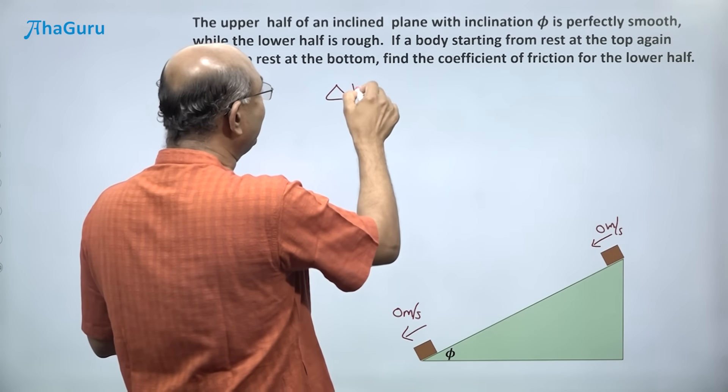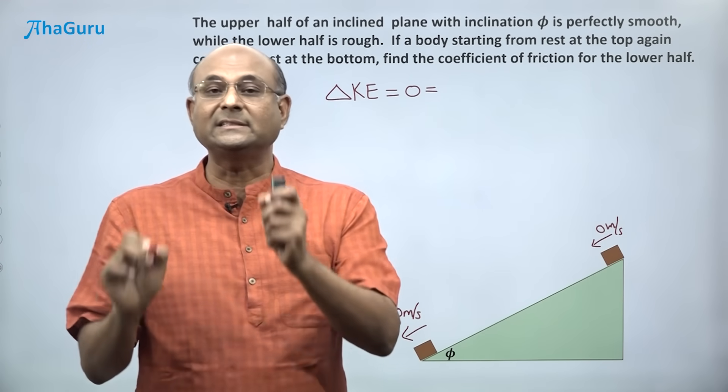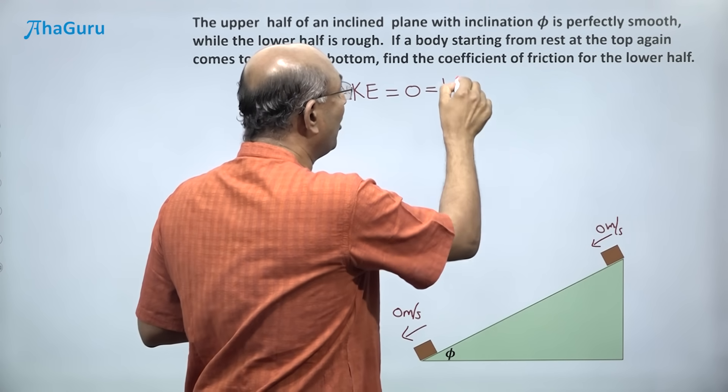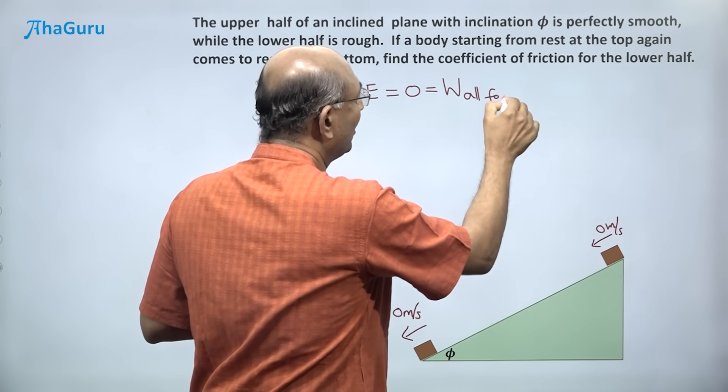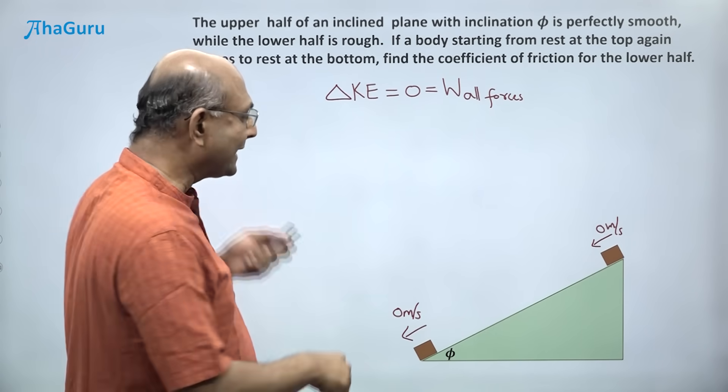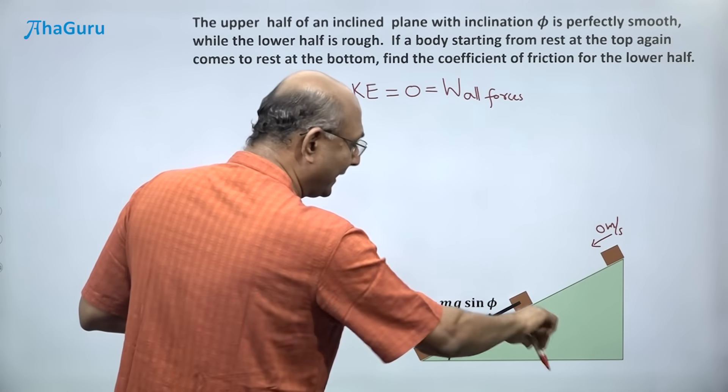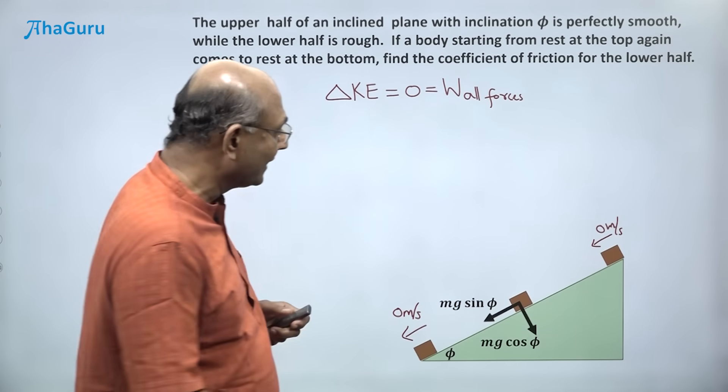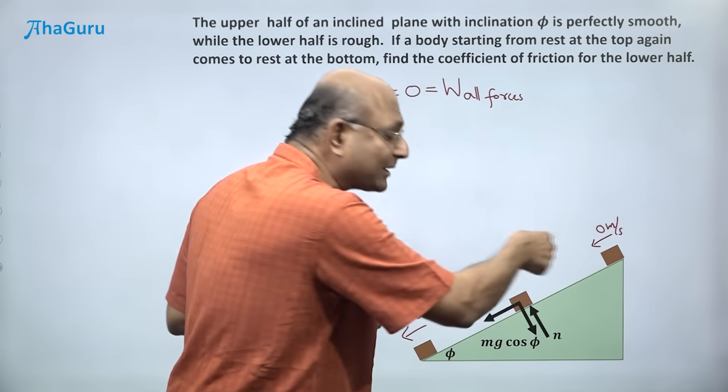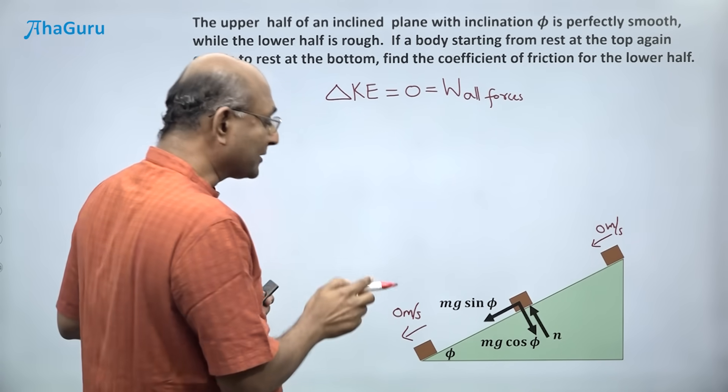But work-energy theorem tells us that the change in kinetic energy of a body is the work done by all forces. What are all the forces acting on this block? Let us see. So this block has mg, which can be resolved as mg sin phi and mg cos phi. It also has a normal force N. For the smooth part of the motion, that's it. These are the three forces we need to worry about. But for the rough part of the motion, there is a friction force f as well.